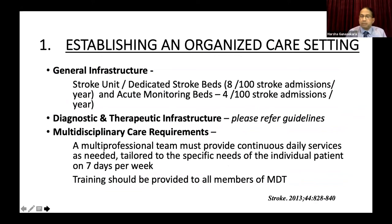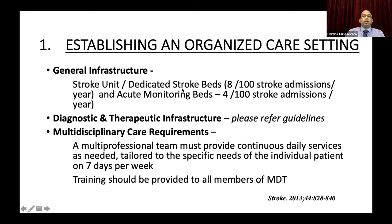Establishing an organized care setting: we face many challenges in our setup. Setting up a stroke unit or dedicated stroke beds — there are guidelines on this. The ESO advises that 100 stroke admissions in the previous year equals approximately one bed required. So if you had 800 stroke admissions, your stroke unit should have eight beds. You need at least four beds, with 50% being acute monitoring beds, which is very important for managing acute stroke patients. Diagnostic and therapeutic infrastructure details are beyond the scope of this talk and are referenced in the guidelines.